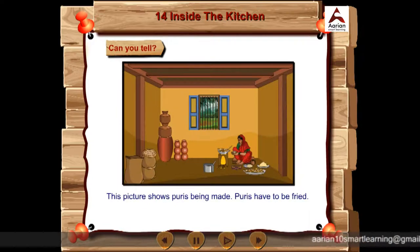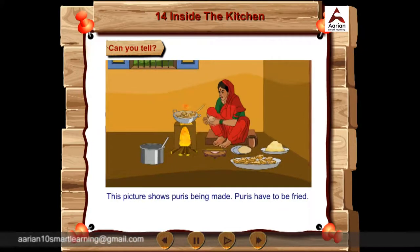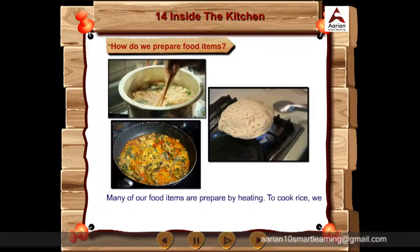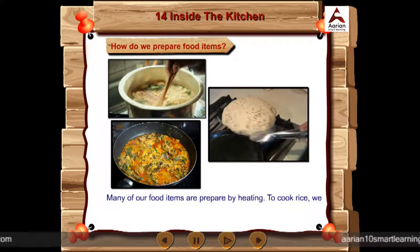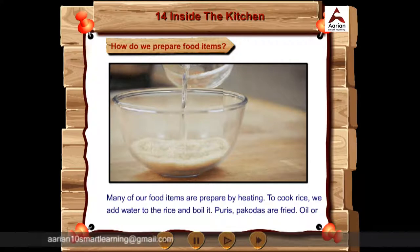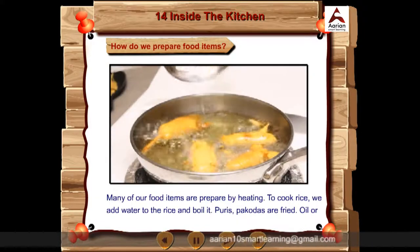This picture shows puris being made. Puris have to be fried. Wood is being burnt to obtain the heat for frying. Many of our food items are prepared by heating. To cook rice, we add water to the rice and boil it. Puris, pakodas are fried.